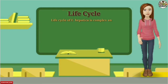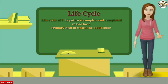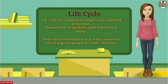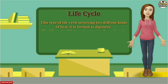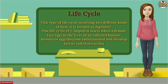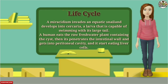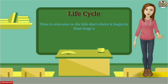The life cycle of Fasciola hepatica is complex and completed in two hosts. The primary host, in which the adult fluke lives, is sheep, while the intermediate host, in which numerous larval stages are passed, is a snail. This type of life cycle involving two different kinds of host is termed digenetic. The life cycle starts when a female lays eggs in the liver of an infected host. Immature eggs become embryonated and develop larvae called miracidia. A miracidium invades an aquatic snail and develops into cercaria, a larva capable of swimming with its large tail. A human eats raw freshwater plants containing the cyst, then the parasite penetrates the intestinal wall, gets into the peritoneal cavity, and starts eating liver cells. It then relocates to the bile duct, where it begins its final stage and becomes an adult.